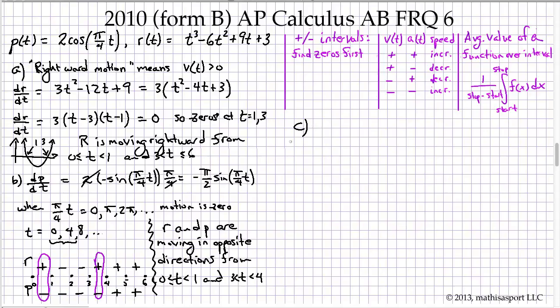Part C asks first about the acceleration and then speeding up or slowing down. So acceleration at t equals 3 is the same as taking the second derivative of P with respect to t and evaluating it at t equals 3. We have the first derivative, so we can just take the derivative of that.